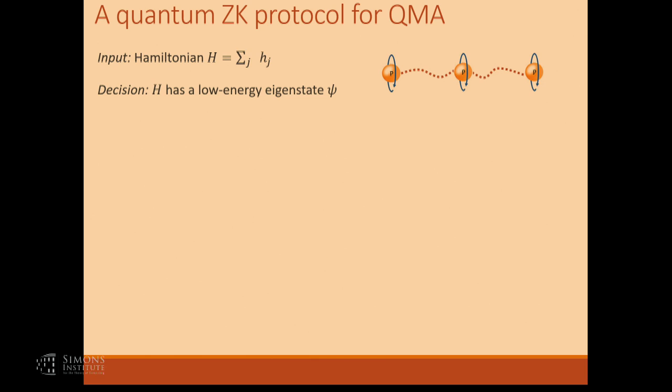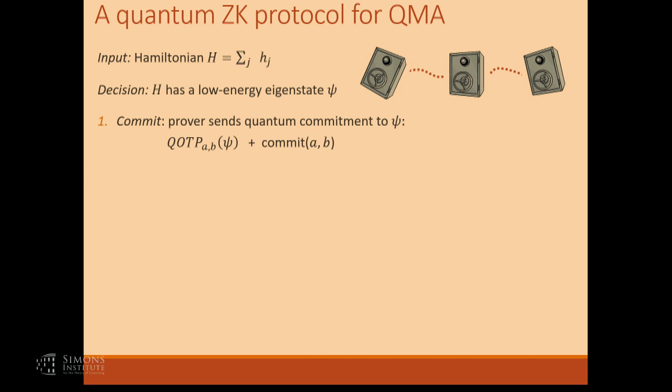Let's go back to our protocol from the previous slide and make everything quantum and see if it works. The protocol almost works. The prover comes up with a quantum state that is the best quantum assignment to the quantum constraint satisfaction problem. We again have a protocol in three phases. In the first phase, the prover sends a commitment — it has to be a quantum commitment. We can do quantum commitments by encrypting the quantum state using the quantum version of the one-time pad.